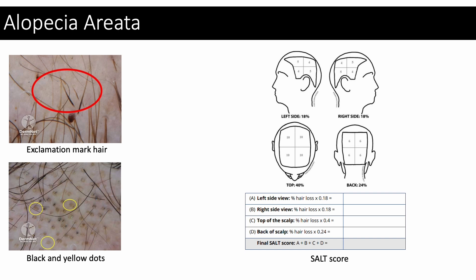We use the SALT score to grade the severity of alopecia, which stands for Severity of Alopecia Tool. The scalp is divided into four different sections and each section is given a percentage as per the hair loss. A high SALT score corresponds to greater severity — for example, a SALT score of 100 means complete hair loss, while a score of 0 means no hair loss.